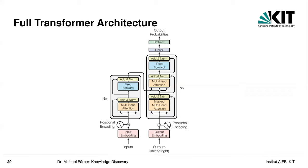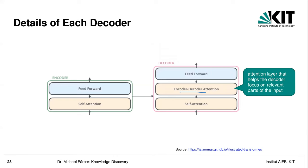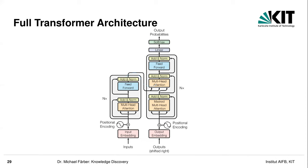Here is the full transformer architecture — this is the famous figure from the paper 'Attention Is All You Need.' On the left-hand side you have the encoder, and on the right you have the decoder. The encoder contains the multi-head attention mechanism and the feed-forward neural network. In the decoder you also have multi-head attention, then again multi-head attention for the encoder-decoder attention, and then the feed-forward network. There are also some small details: add-and-norm layers for regularization, linear projections, and positional encoding. These are not so important for the main understanding.